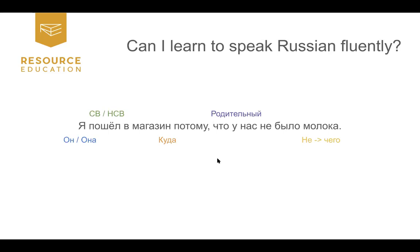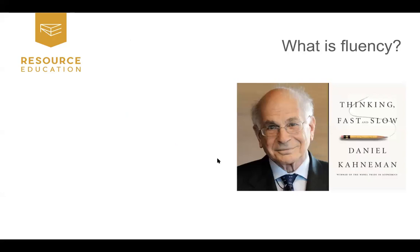I'd like to introduce you to two psychologists who have really reshaped the way I teach languages. From their theory we're going to do a lot of activities. The first is Daniel Kahneman, referred to as the grandfather of behavioral psychology. He really changed the way I thought about fluency. You already have some very good words in the chat that come from his book — if you haven't read it, I highly recommend 'Thinking Fast and Slow' by Daniel Kahneman. He won a Nobel Prize for it. We all agree firstly that fluency is a flexible use of what you know.